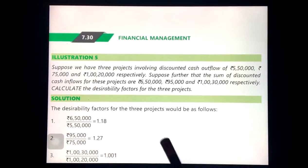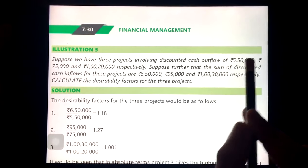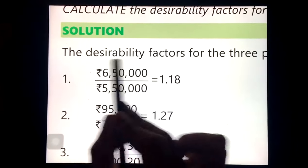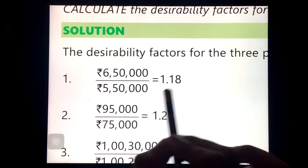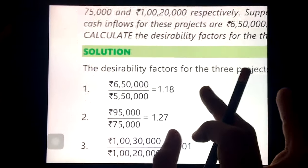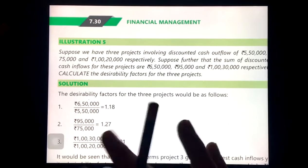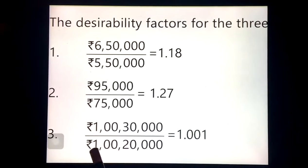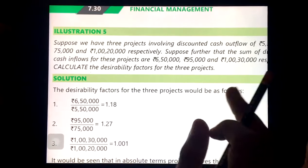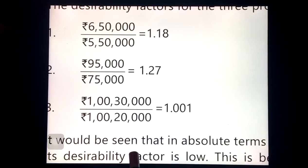PI equals Inflow divided by Outflow. For Project 1: ₹6,50,000 ÷ ₹5,50,000 = 1.18. For Project 2: ₹95,000 ÷ ₹75,000 = 1.27. For Project 3: ₹1,30,000 ÷ ₹1,20,000 = 1.001.